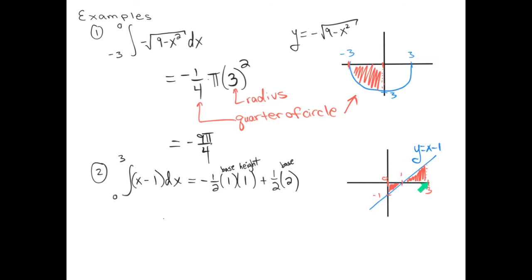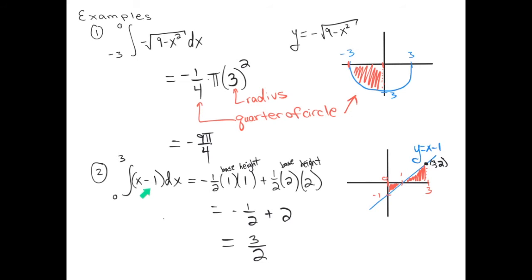The second triangle has base 2 (from x equals 1 to x equals 3). The height is the function value at x equals 3: 3 minus 1 equals 2. So the height of the second triangle is 2, giving one-half times 2 times 2 equals 2. Adding the two areas together, the value of this definite integral is 3 halves.